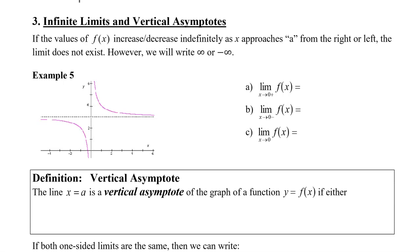So let's take a look at this first example. In this function, I'm asking what is the limit as x approaches 0 from the right? We know it's from the right because of the positive sign. So from the right would be from this side, and we're approaching 0, which is on the y-axis. As we approach from the right, we can see that the graph keeps going up and up, which means that it's going towards infinity.